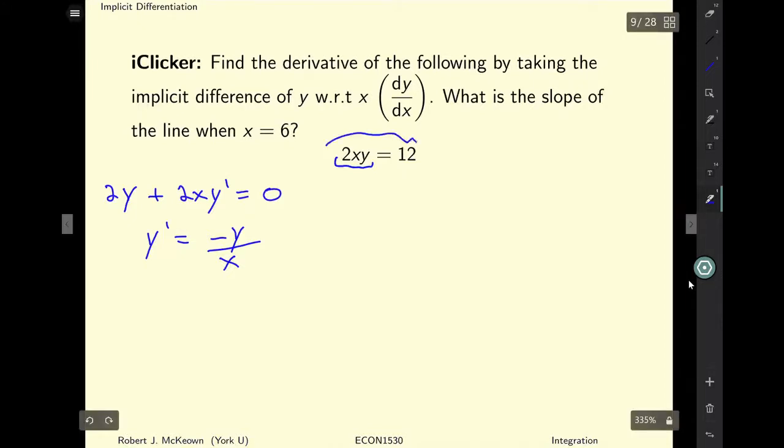Now we can see with this function that we can actually have just written it explicitly. So y would be equal to 12 over 2x. And if we took the derivative of this thing with respect to x, we would get negative 6x to the negative 2, which is equal to negative 6 over x squared.